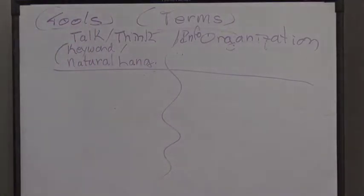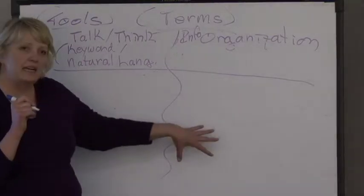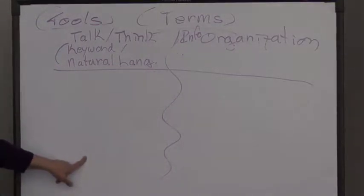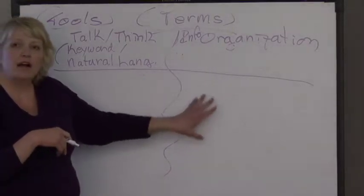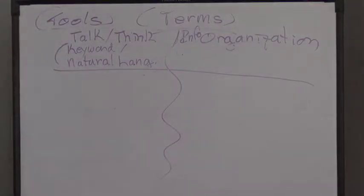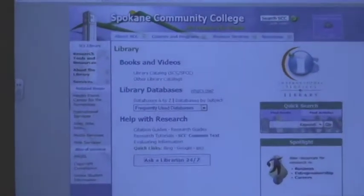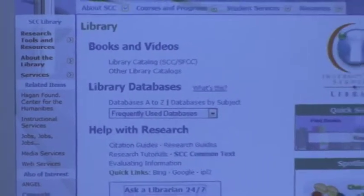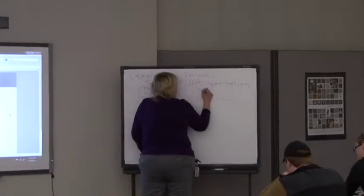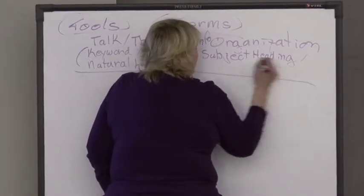Your job in developing a language strategy is to put down what you think you're going to look under — that's where you take the words from your mind map. Then you figure out how the information is organized in these different tools. The language the book catalog uses is different from the database, which is different from what's available through Google. You've got to have a good grip on the possibilities for your words. The way information is organized is called the subject heading, or what we call controlled vocabulary.